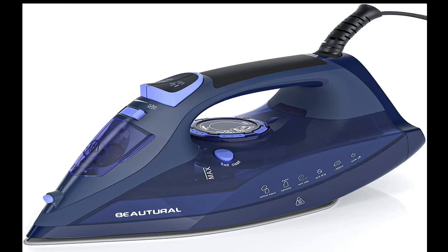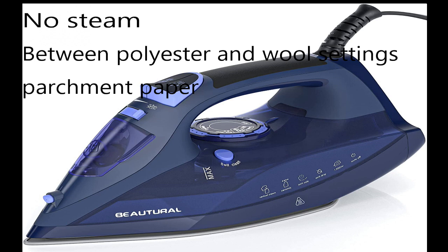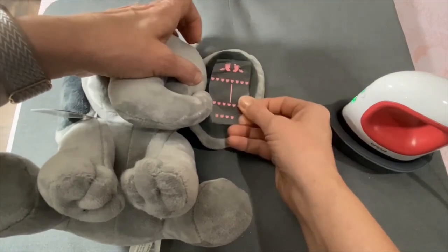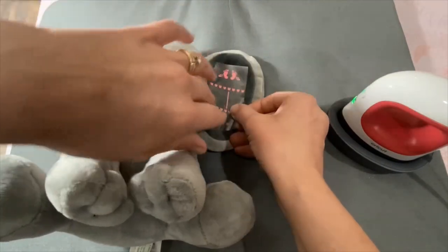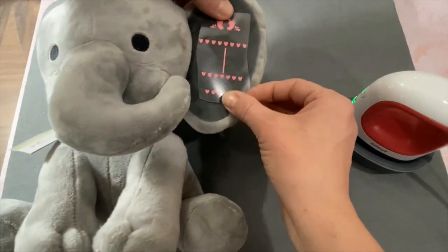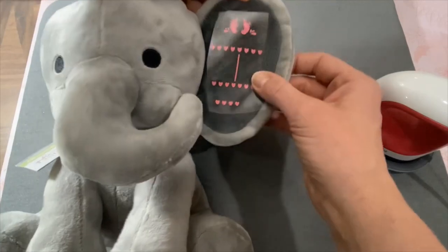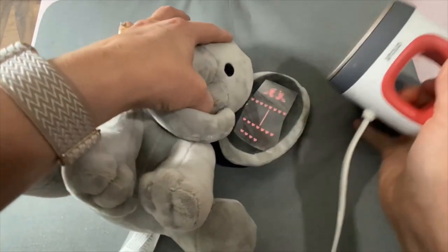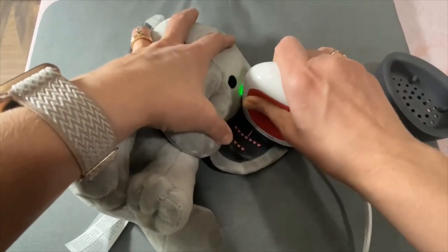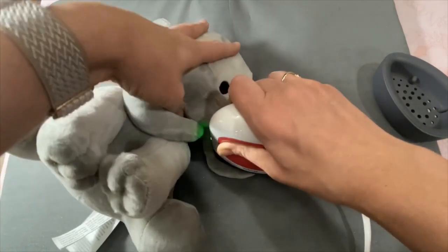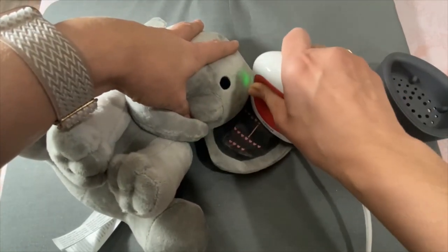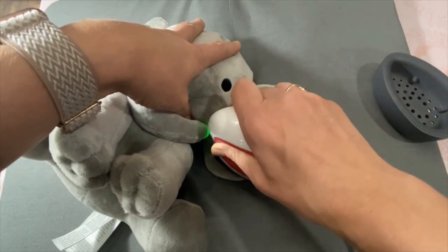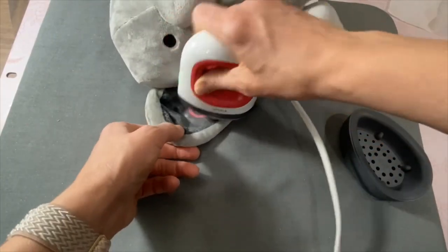If you don't have an EasyPress Mini, you can use a home iron. According to the Caesar HTV website, use it with no steam, set between polyester and wool settings, and use a piece of parchment paper on top of the carrier sheet. Place your elephant onto a heat-safe surface such as a Cricut EasyPress mat or an ironing board. Put your HTV design onto the elephant's ear, center it up so it looks nice, then place the heated EasyPress on top of the clear plastic carrier sheet and slowly move it around. Since you are layering colors, leave it on just long enough for the vinyl to release from the carrier sheet.